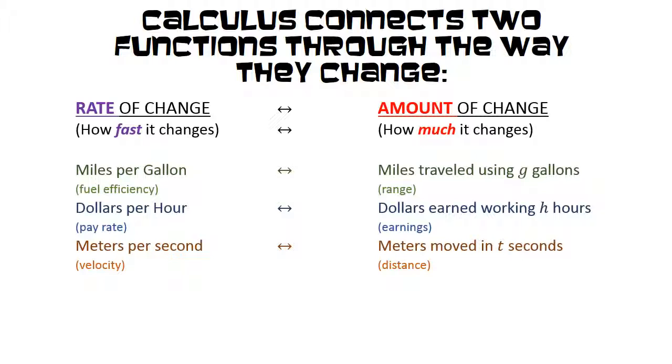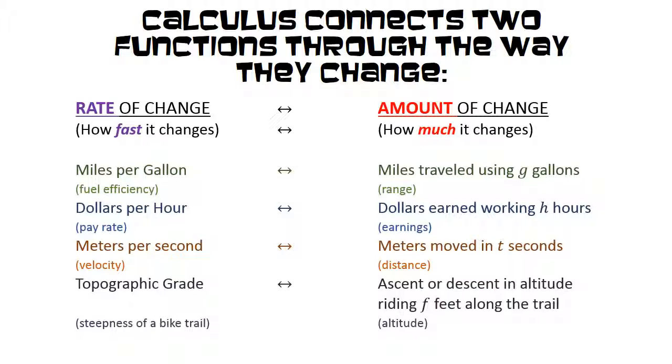The rate of change might be velocity, measured in meters per second. And the amount of change is the distance that's moved in some period of time, t seconds. We can even look at something like topographic change, which would be the ascent or descent in altitude as you ride some number of feet along a bike trail.